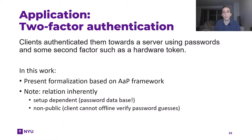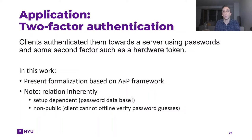Moreover, inherently we do not want the prover to be able to evaluate the proof relation themselves, because that would mean that anybody can do offline brute-force attacks on the system. Finally, this example also shows that our agree-and-prove formalization can not only handle proof of knowledge type stuff, but also this kind of hardware token proof that is not really a proof of knowledge — because there is nothing to extract — but rather some kind of proof of ability, where a prover demonstrates that they have access to something physical, which in our case we model as having specific access to the setup functionality.